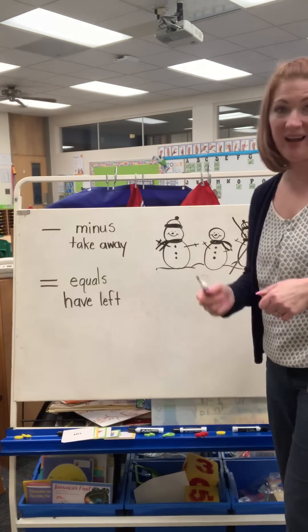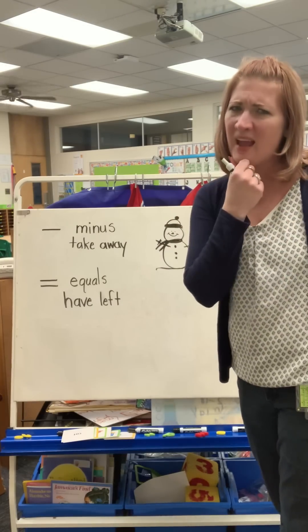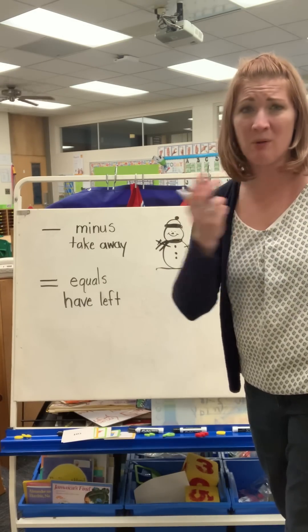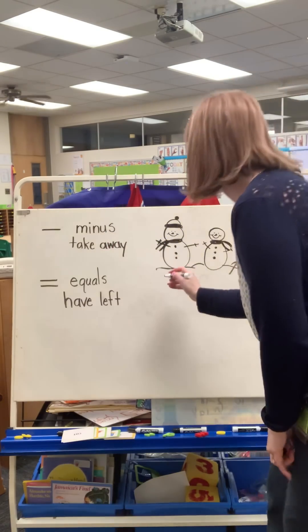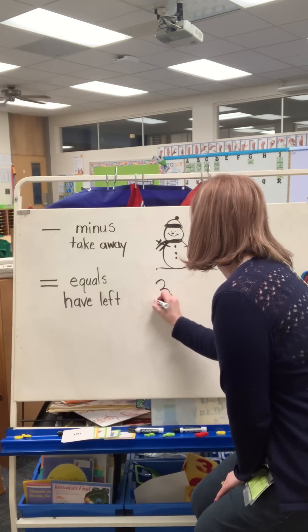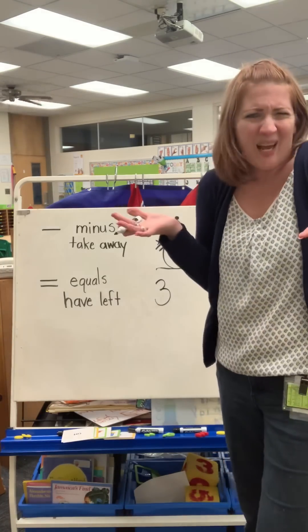When I look at this problem, I need to think, okay, how many snowmen did I start with? What was my big number? Three. So I'm going to write three. Now what happened?